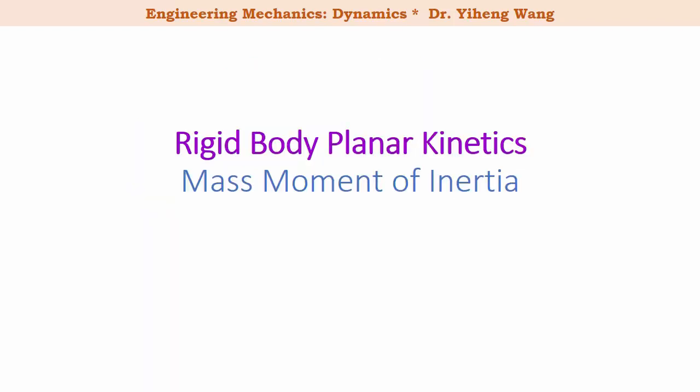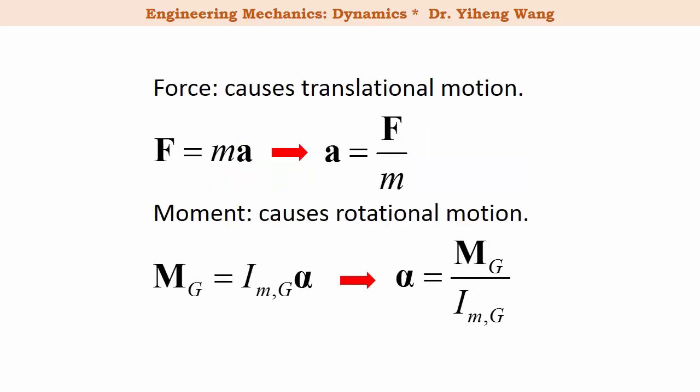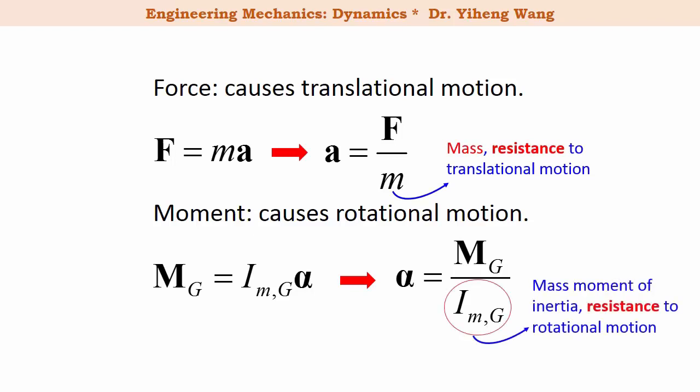With this video we begin the study of rigid body planar kinetics. We will start with mass moment of inertia. Since I introduced mass moment of inertia and explained how to calculate it in the course of statics, in this video I will not go into details. Please review statics if necessary. The best way to understand mass moment of inertia is by comparing rotational motion to translational motion. Mass provides resistance to translational motion; similarly, mass moment of inertia provides resistance to rotational motion.